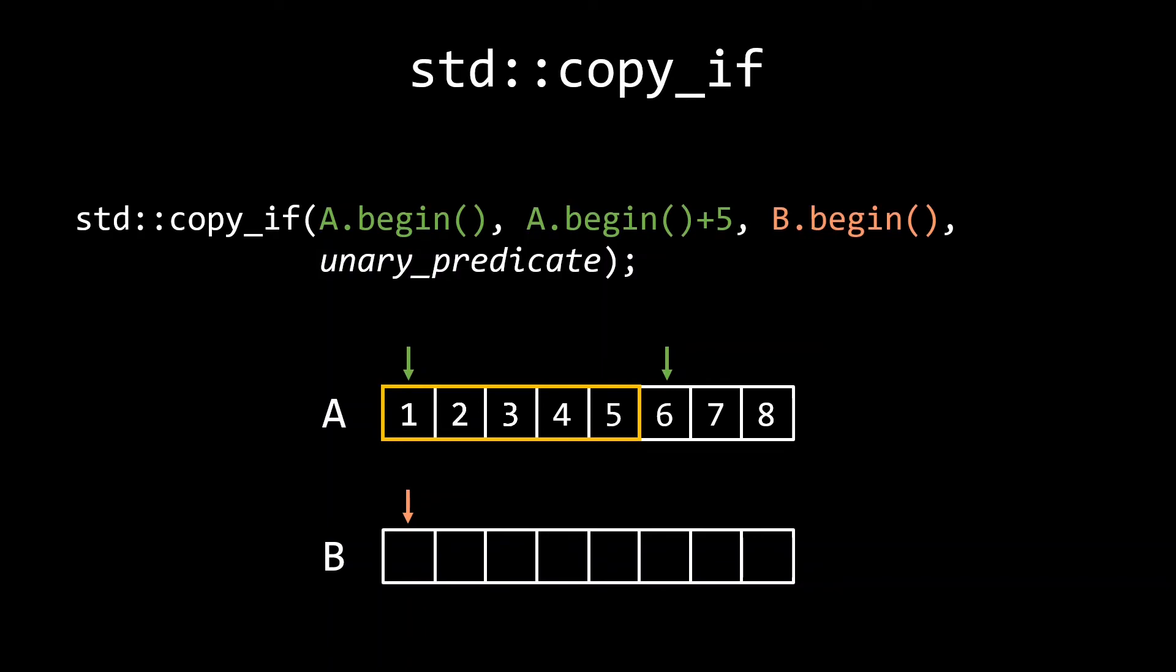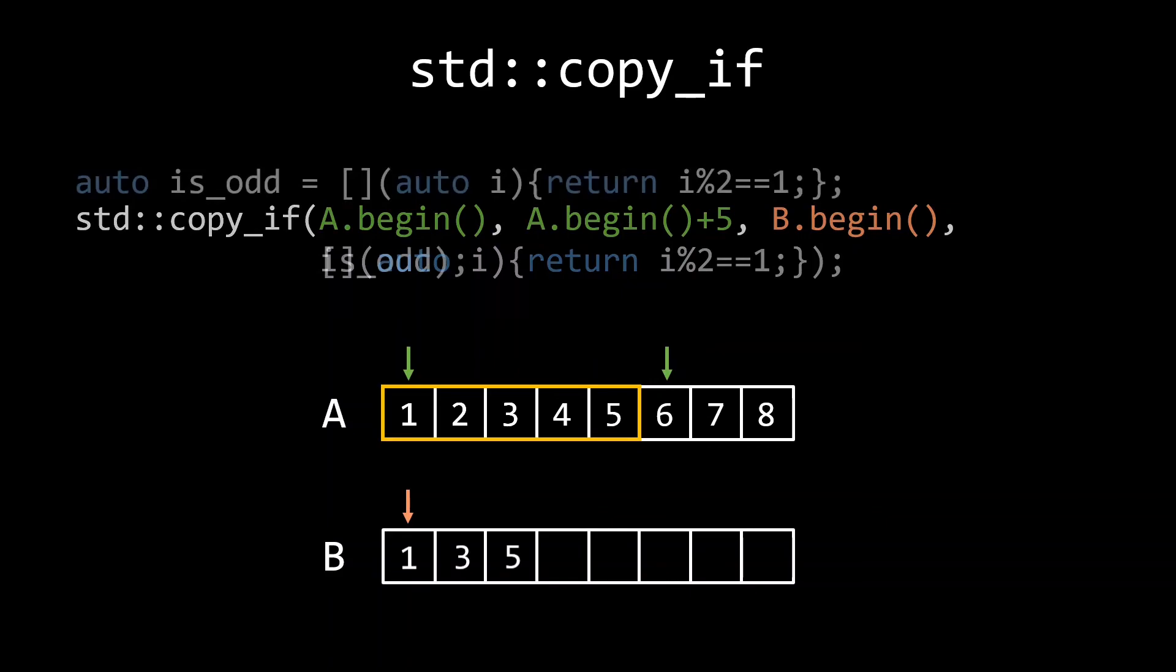For example, if we want to copy only those elements which are odd, we could write something like this. We use a generic lambda accepting the element by value and checking whether the value modulo 2 is equal to 1. Only when this predicate matches will an element be copied to the destination iterator and will that iterator be incremented. The result for this example input is that only the elements 1, 3, and 5 are copied to B. Of course we could make this code a bit more readable by creating the lambda outside of the copy_if statement and giving it a proper name.